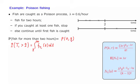Notice the difference between these two approaches. In the first, we think in terms of the random variables corresponding to the number of arrivals during a certain time interval. In the second, we're reasoning in terms of inter-arrival times.